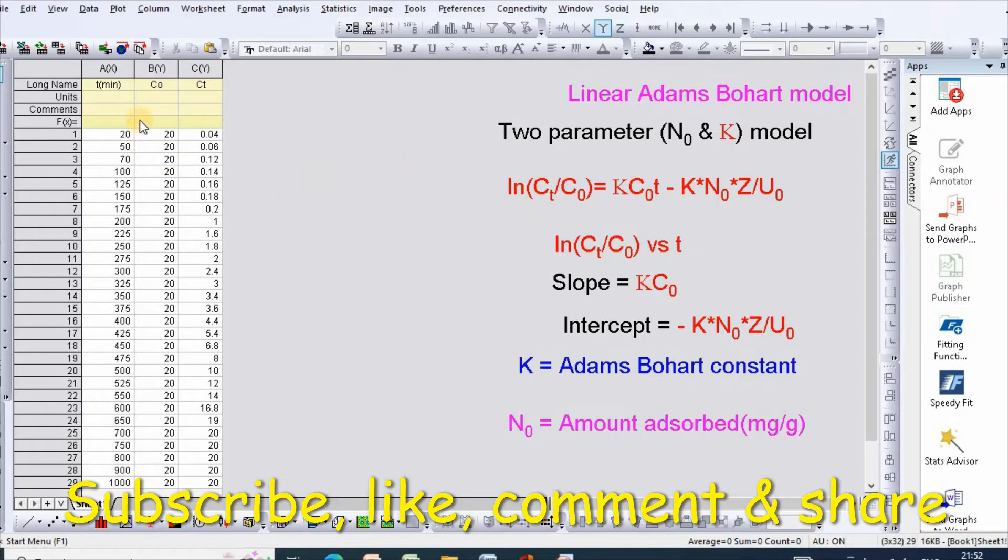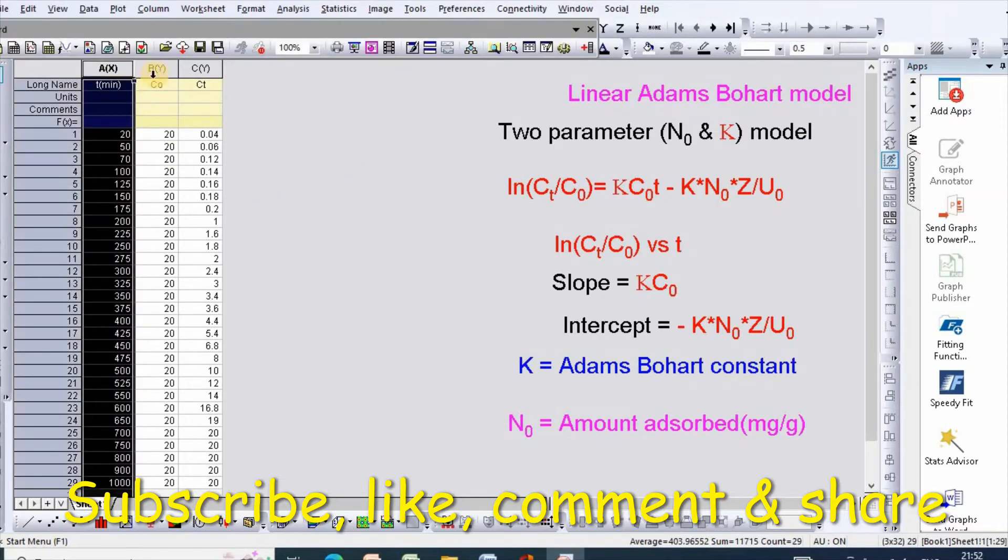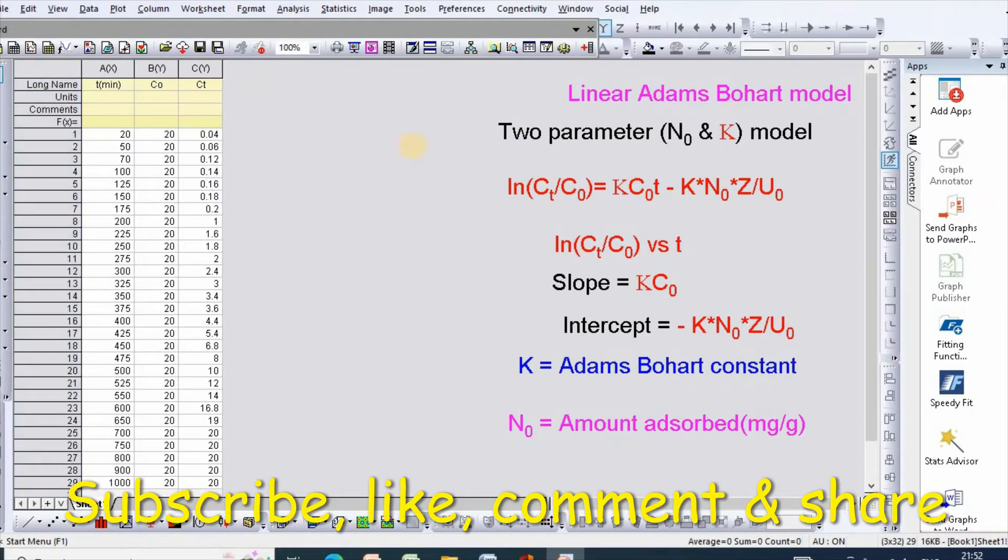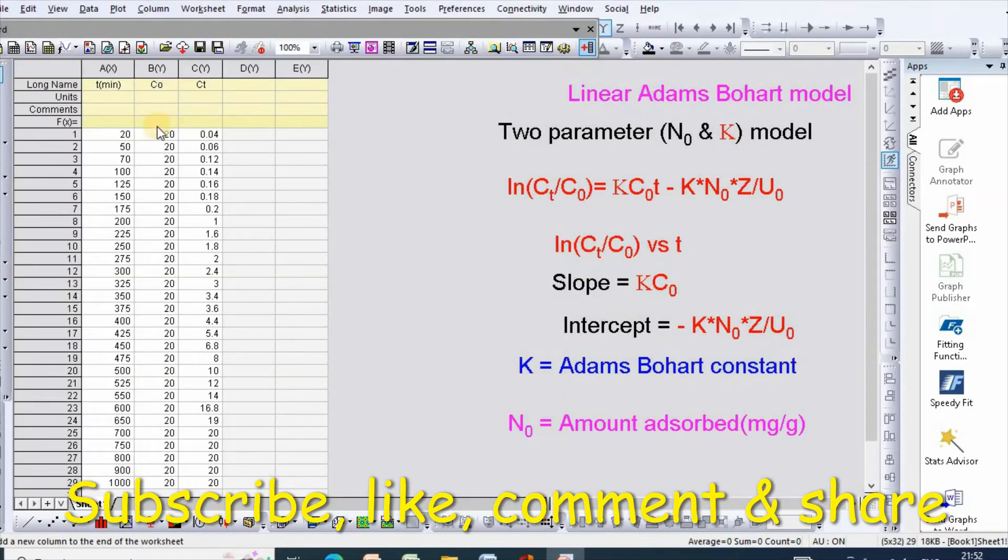In order to fit, I have taken data for time, C0, and Ct. In order to plot ln(Ct/C0), you have to convert it. So click plus new column. At first, you need to convert Ct by C0.